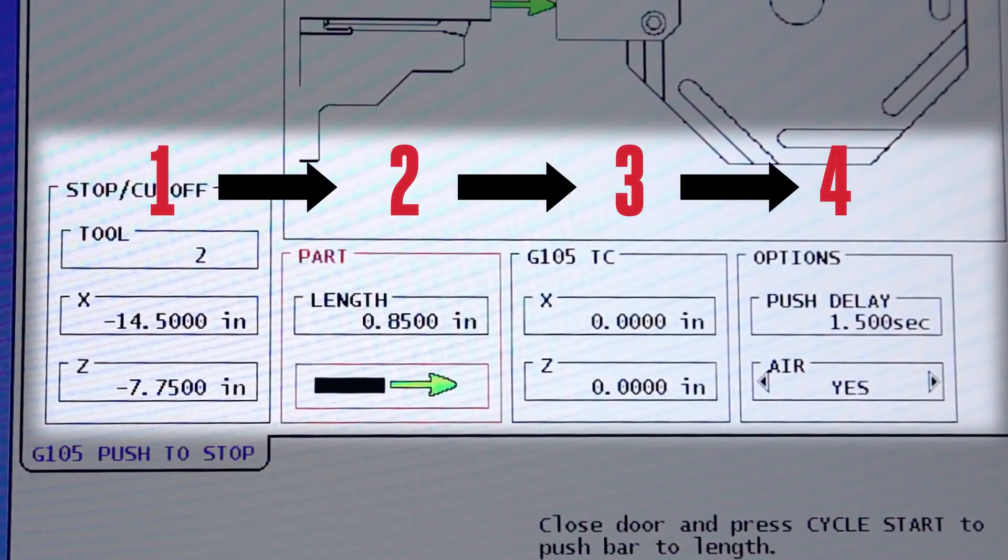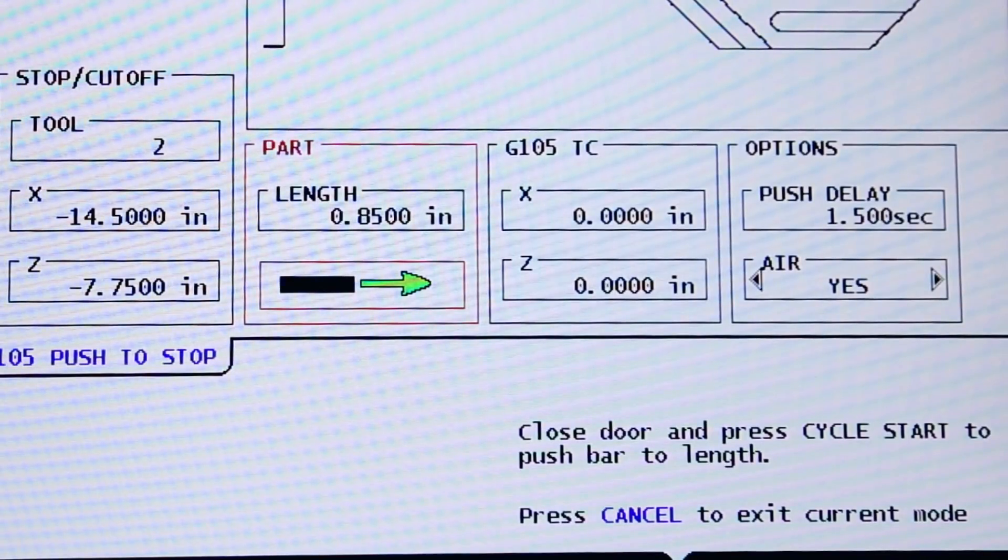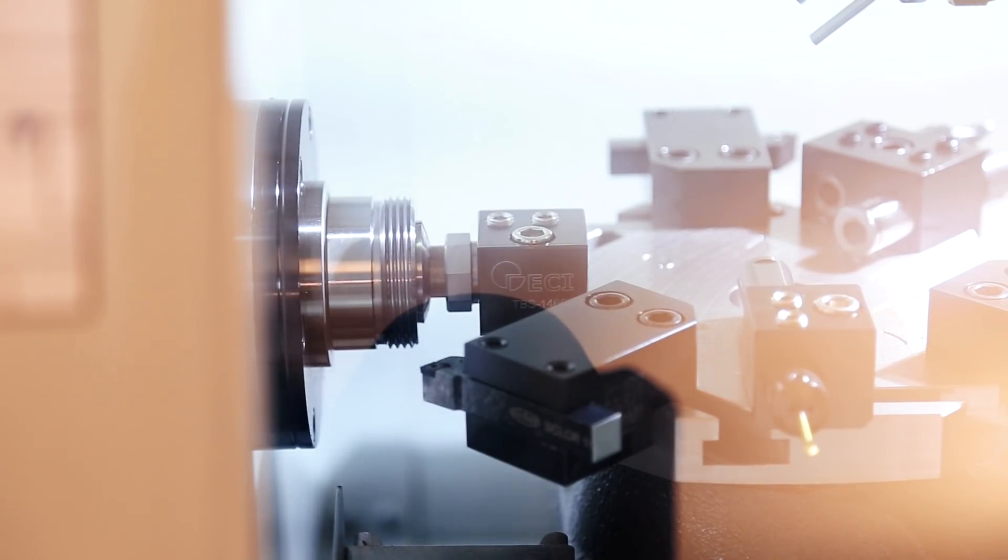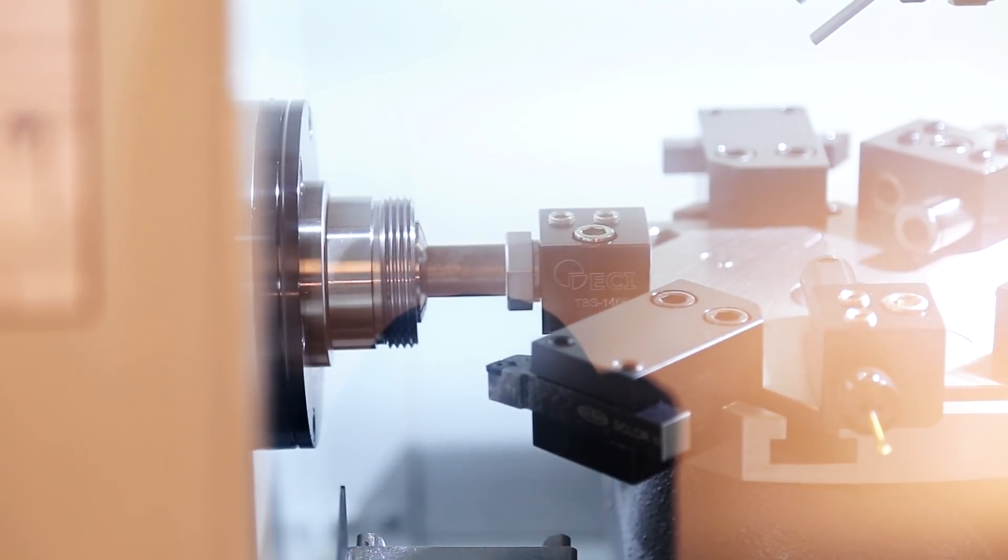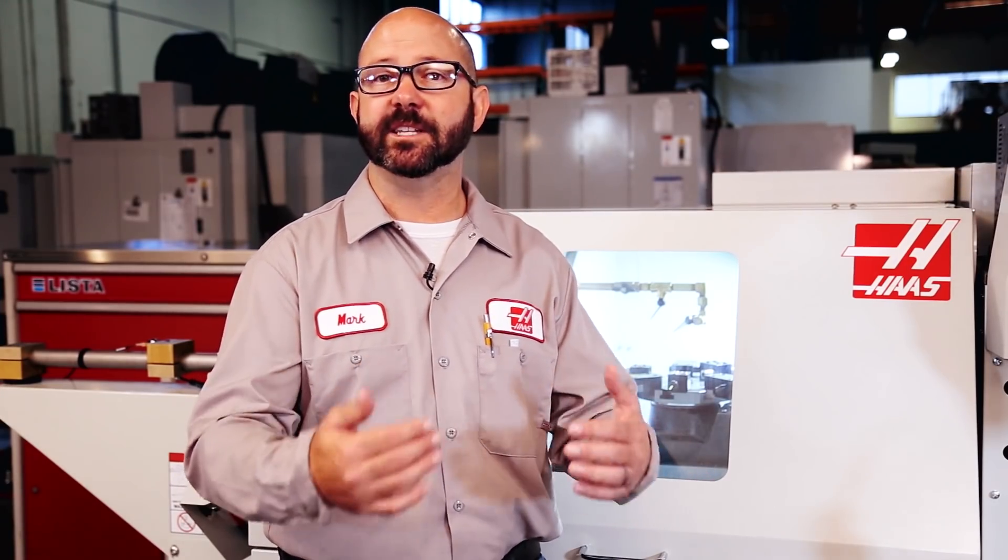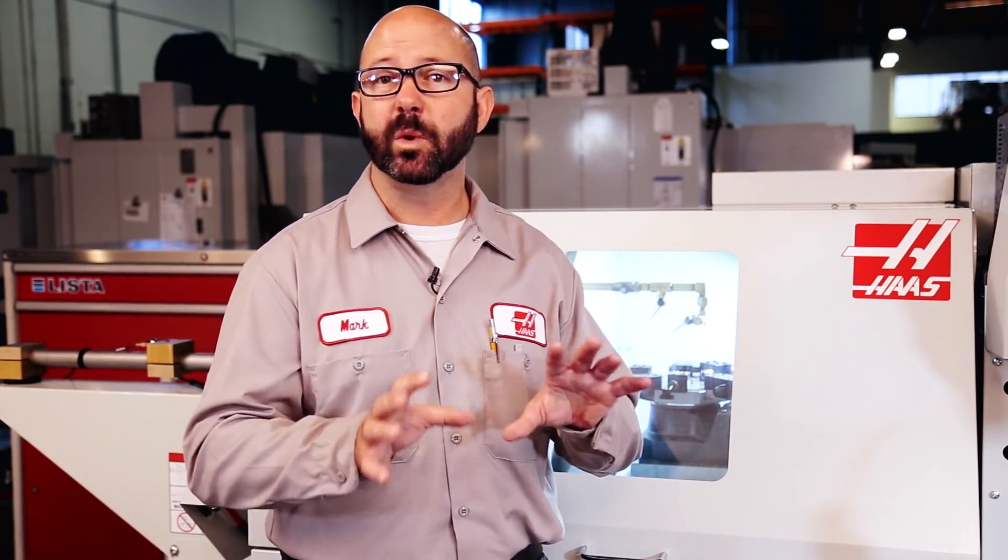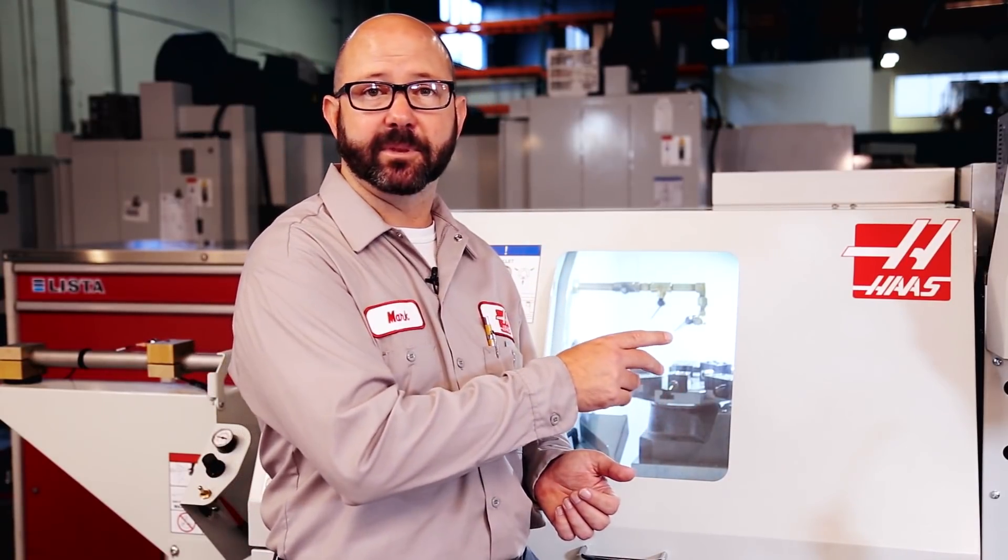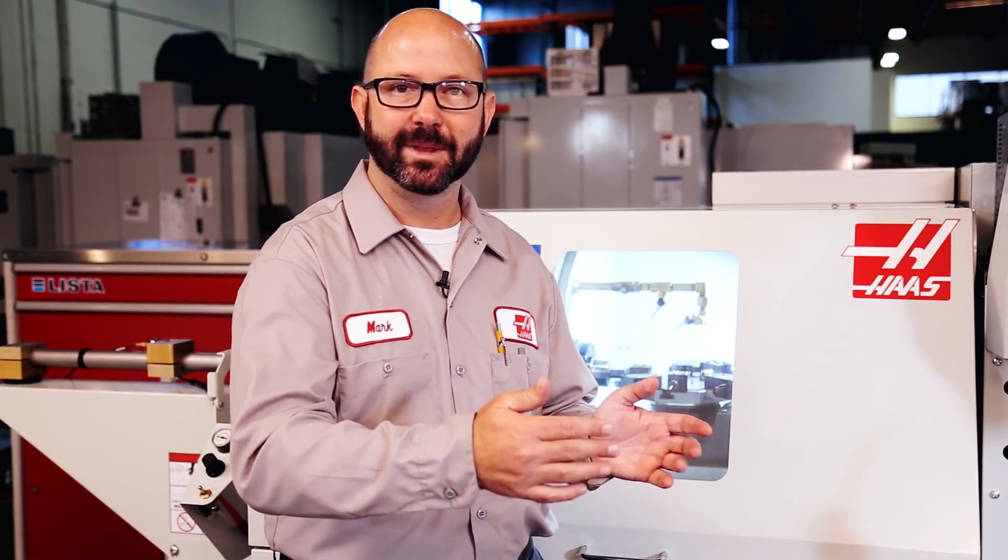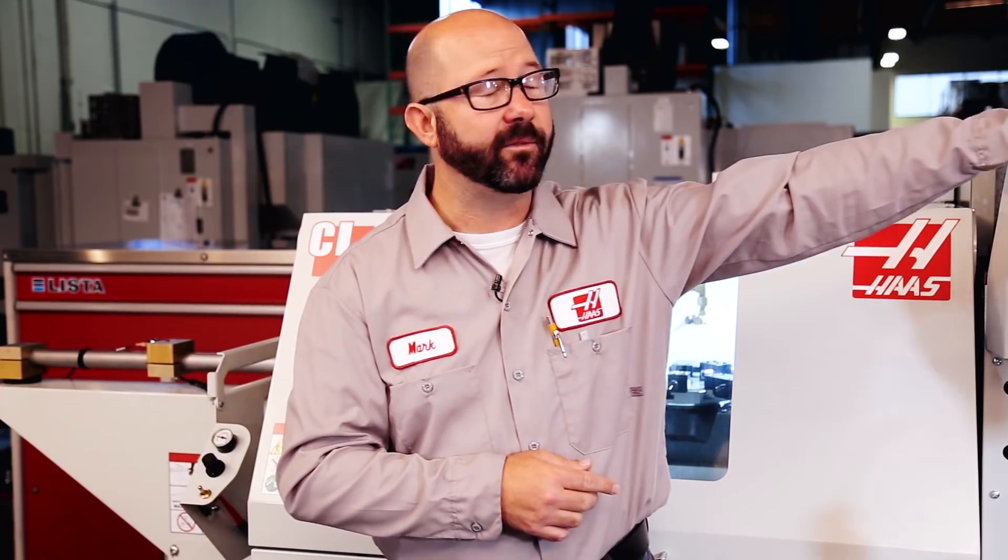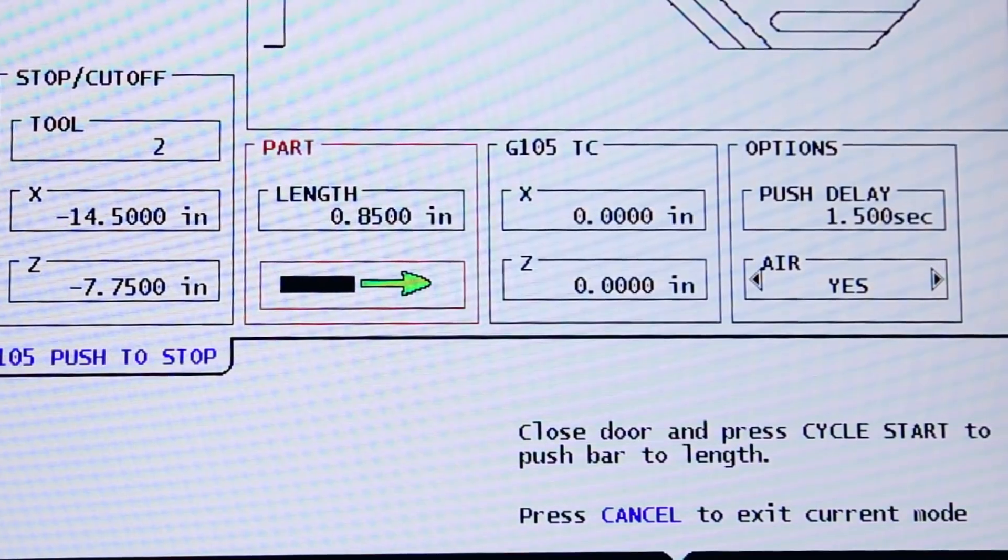And again, we always want to fill out these columns going left to right. One, two, three, four. The control moves us down to the next input field. The on-screen instructions say close the door and press cycle start. The door is closed. I'll press cycle start. Well, that was pretty cool. What we just saw there is exactly what the machine is going to be doing when we run it in automatic mode. Our bar is going to be advanced and pushed up against the stop that's mounted in our turret. Push to stop. And then it's going to be advanced by that .85 inches. The .85 that we just entered.